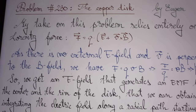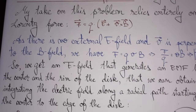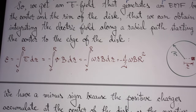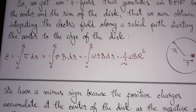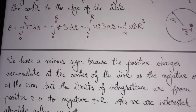Let's now look at Oregon's solution of Problem 230. He writes: my take on this problem relies entirely on the Lorentz force F = Q(E + V × B). E is the electric field if present. As there is no external E field, and since V is perpendicular to the B field, this F is simply QVB. So we get an E field that generates an EMF between the center and the rim of the disk, which we can obtain by integrating the electric field along the radial path, starting from the center to the edge of the disk.